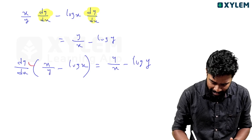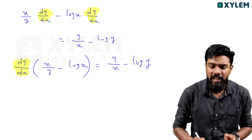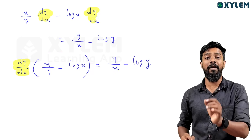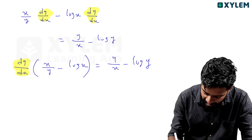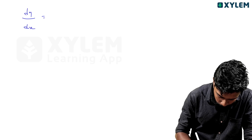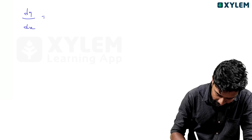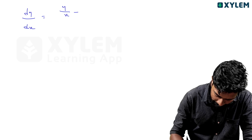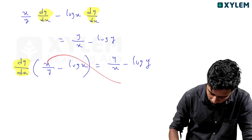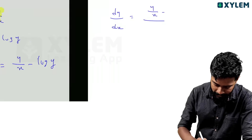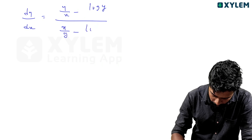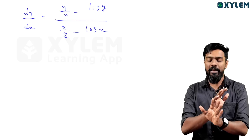Now collecting dy by dx terms. We have dy by dx terms: x by y into dy by dx minus log x into dy by dx equals y by x minus log y. Taking dy by dx common on the left: dy by dx into x by y minus log x equals y by x minus log y.